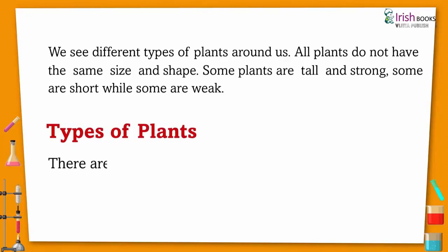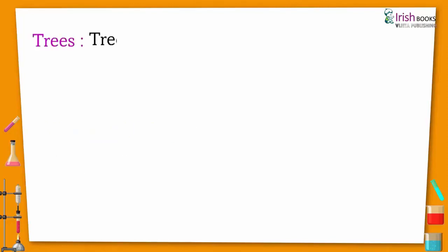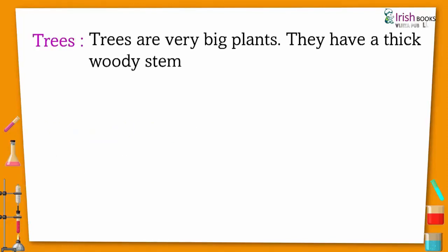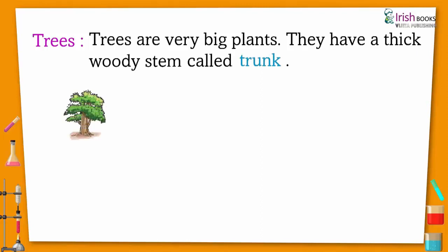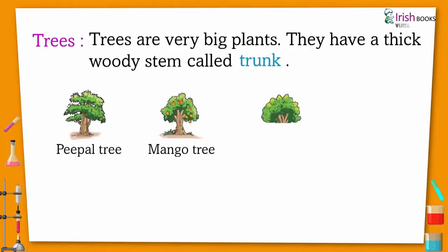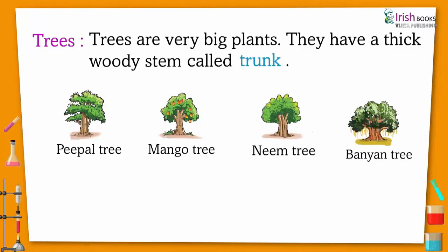Types of plants. There are different kinds of plants. Trees are very big plants. They have a thick woody stem called trunk. Like people tree, mango tree, neem tree, banyan tree.